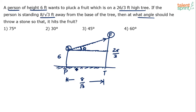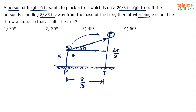The answer cannot be strictly determined because we're assuming he throws the stone from the top of his head, which usually doesn't happen. Also, a thrown stone doesn't travel in a straight line. We're assuming the stone is thrown from a height of 6 feet, and that the fruit is sitting exactly on top of the tree at 26/3 feet high.